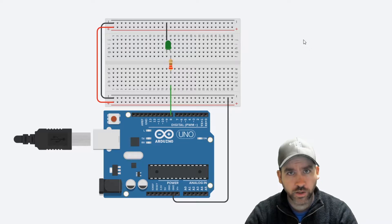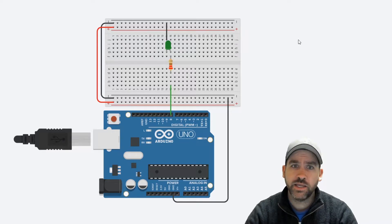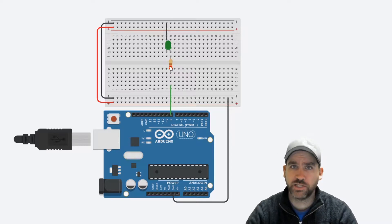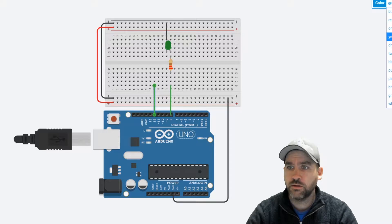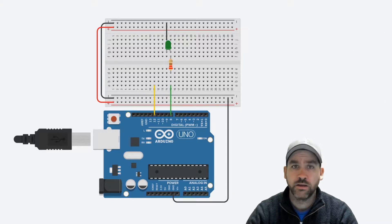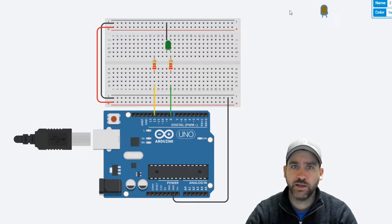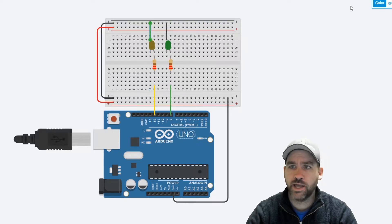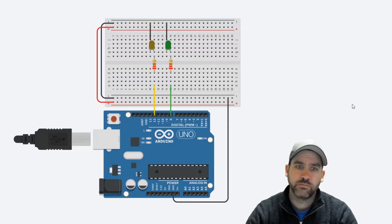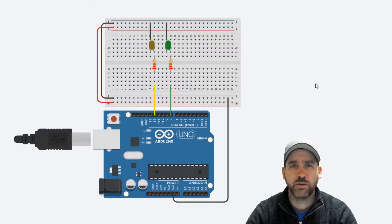To start us off we'll look at our wiring diagram that we left lesson three with. Here we have a single LED wired up to pin number eight through a 220 ohm resistor. I'm going to bring in a second LED to this circuit. From pin 12 on my Arduino I'll come up to the breadboard, add a 220 ohm resistor to bridge the gap, and connect a yellow LED with the long leg to the resistor and a wire to the ground channel. Here's the completed circuit we're going to use for lesson four.